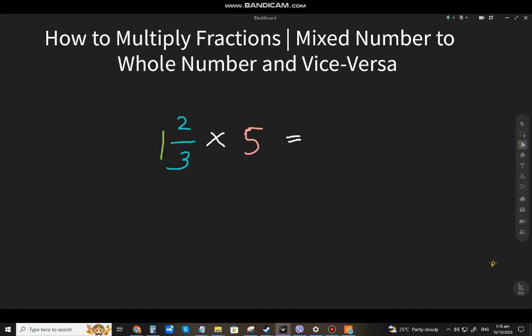So let's start with the first example. Our example is 1 and 2 thirds, multiply by 5. So how are we going to do this? Are we going to multiply it directly?